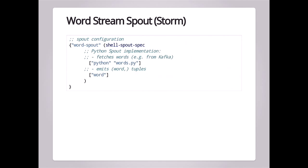The two things you need to do to use Storm: write your logic using some integration library — we've built one called StreamParse — and then describe the layout of your topology in a domain-specific language. In this case, the language is the Clojure DSL that's bundled with Storm. It's written in Java's Clojure, a Lisp-like programming language, but you don't really have to know much about Clojure to use it. It looks kind of like a Python dictionary — basically saying, I have a spout called a Word spout, that spout corresponds to a file called words.py, and it emits a tuple with one field called 'Word'.